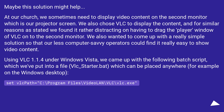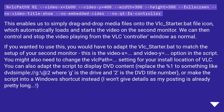Using VLC 1.1.4 under Windows Vista, we came up with a batch script placed in a file called `vlc_starter.bat`, which can be placed anywhere, for example on the Windows desktop. Set VLC path to `C:\Program Files\VideoLAN\VLC\vlc.exe`. Then: `%fullpath% %1 --video-x=1600 --video-y=400 --width=300 --height=300`